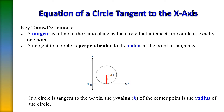If a circle is tangent to the x-axis, then your y-value, k, of the center point is going to be the radius of the circle. Here we have a circle that touches the x-axis — it's tangent to the x-axis — which means that if we move over x and up y on the coordinate system, whatever our y-value is, that is going to be the radius of the circle.